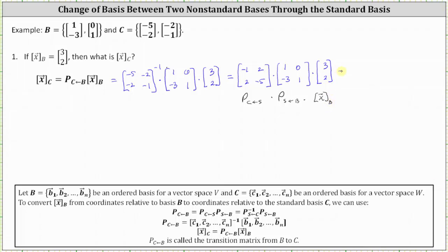The entry in row one, column one is (-1)(1) + (2)(-3) = -7. The entry in row one, column two is (-1)(0) + (2)(1) = 2. The entry in row two, column one is (2)(1) + (-3)(-5) = 17. The entry in row two, column two is (2)(0) + (-5)(1) = -5.